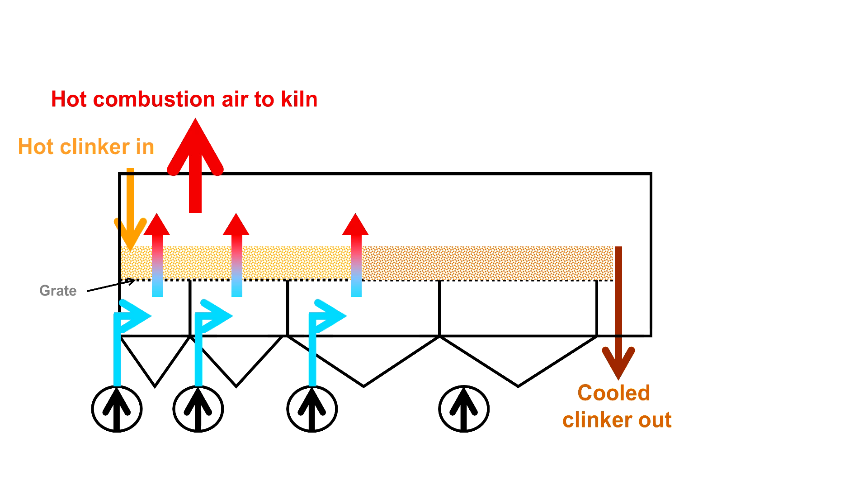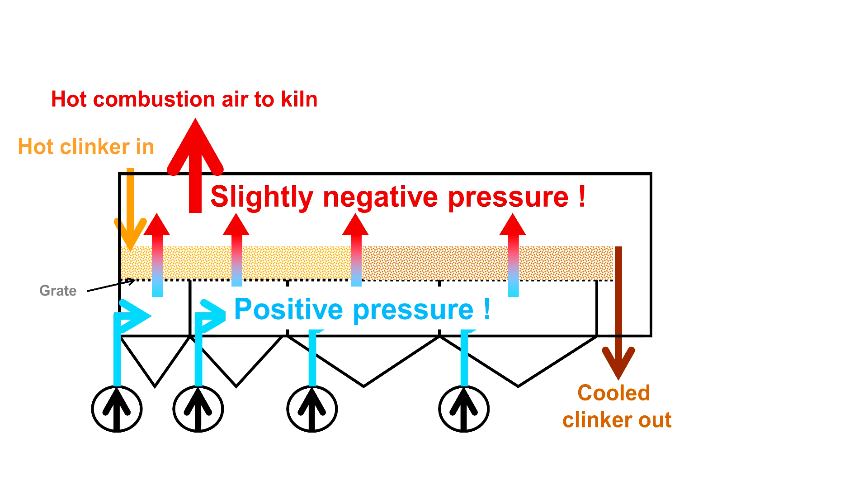We need a lot of air to cool down all this clinker. This air will create a positive pressure under the grate, but we want to keep a slightly negative pressure on top of the grate. For this, we need an additional extraction, so-called waste air.